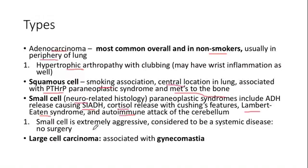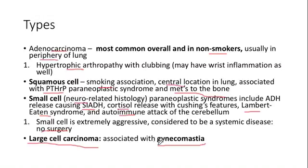With small cell cancer, we don't do surgery because it's so aggressive it's probably already metastasized — small cell never has surgery. For large cell carcinoma, it's pretty uncommon. The association to know is gynecomastia: if they tell you a man has a lung mass and gynecomastia, the most likely lung cancer is large cell carcinoma. That's really all you need to know about large cell.